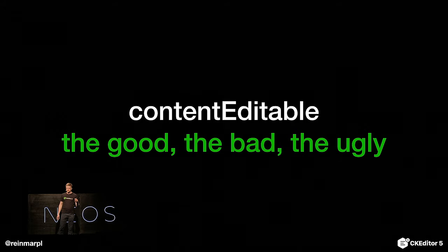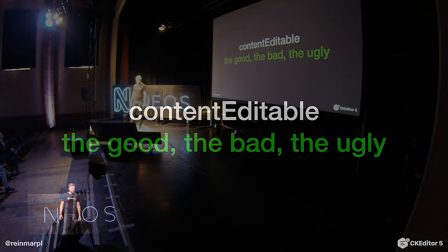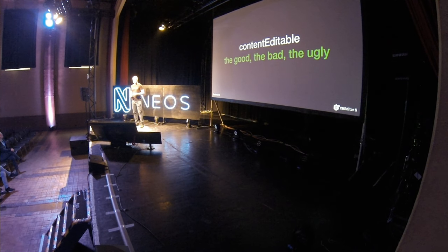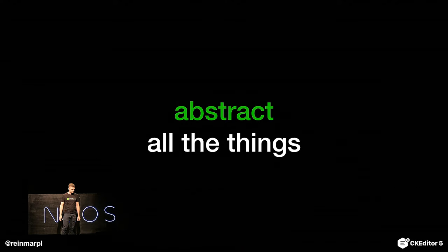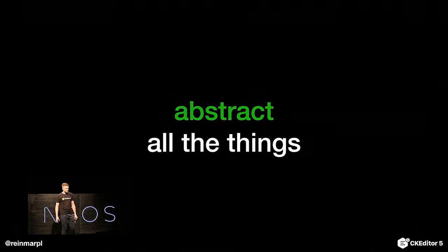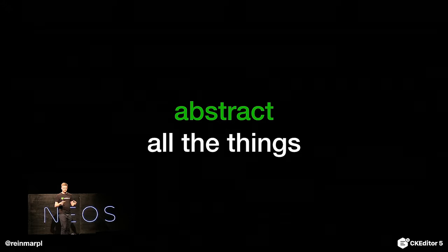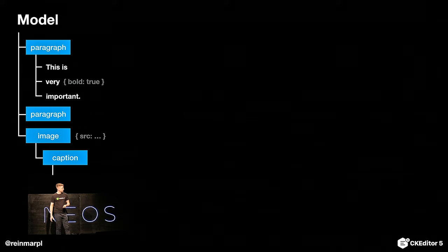Instead of trying to kill contenteditable, let's try to tame it and see what we can do. What we've learned so far is that the DOM is really bad at representing rich text and the selection there is really tricky to work with. So what if we created an abstract representation of this rich text and worked with that? This abstract structure can be designed specifically to represent rich text, and then it will be easier to work with.